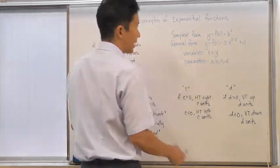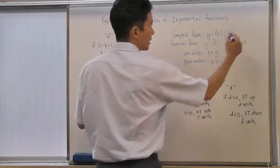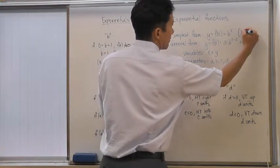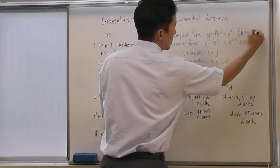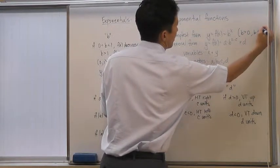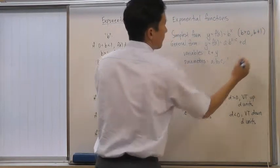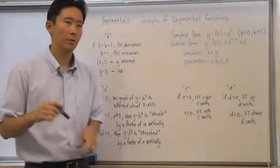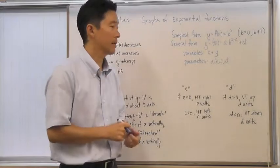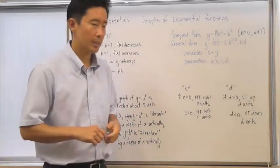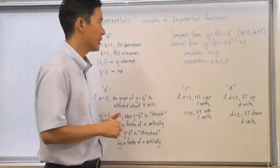With the simplest form, you have to be careful because there is a condition that says b has to be greater than 0 and not equal to 1. It's going to be important for you to know why, so think about that, and we can discuss it later if we need to.